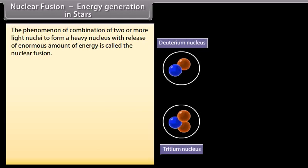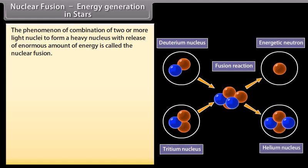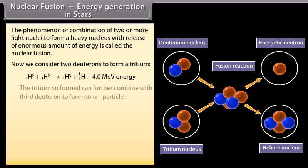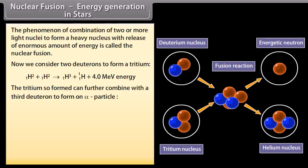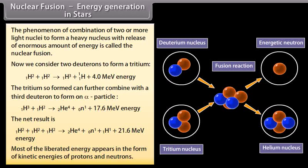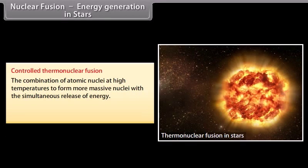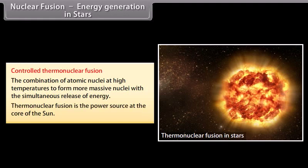Nuclear fusion — energy generation in stars: the phenomenon of combination of two or more light nuclei to form a heavy nucleus with release of enormous energy is called nuclear fusion. Two deuterons can form a tritium, and the tritium so formed can further combine with a third deuteron to form an alpha particle. Most of the liberated energy appears as kinetic energies of protons and neutrons. Controlled thermonuclear fusion — the combination of atomic nuclei at high temperatures — is the power source at the core of the sun.